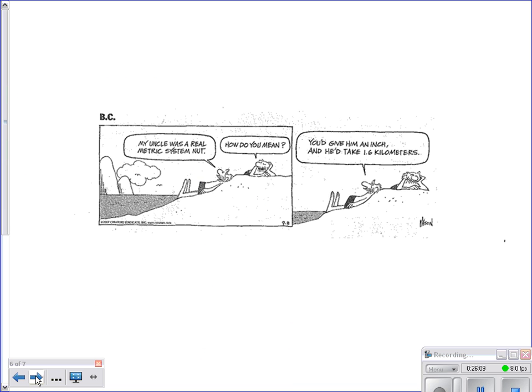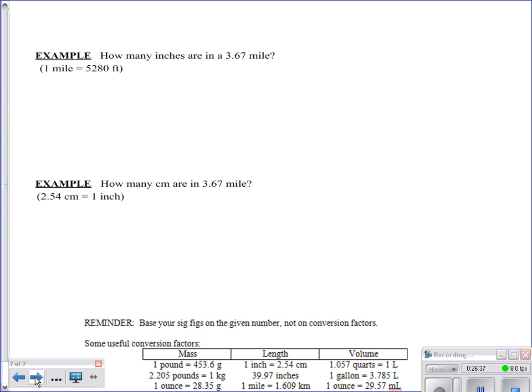Here's a silly little cartoon. I'll read it to you if you can't read it in the back. It says, My uncle was a real metric system nut. Well, how do you mean? You give him an inch and he'd take 1.6 kilometers. Nobody laughed. Not one laugh in the whole room. The whole give him an inch, he'll take a mile. Get it? So he'll take 1.6 kilometers. They're laughing. Deep inside, they're laughing right now. Way deep inside.